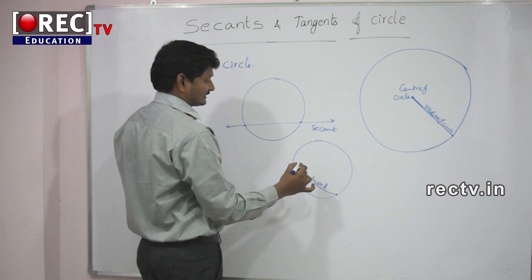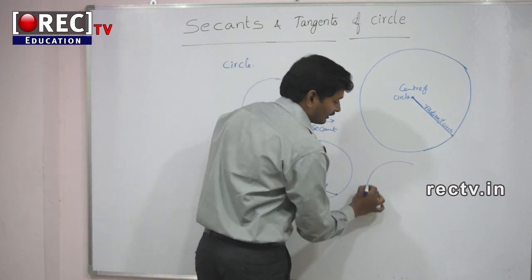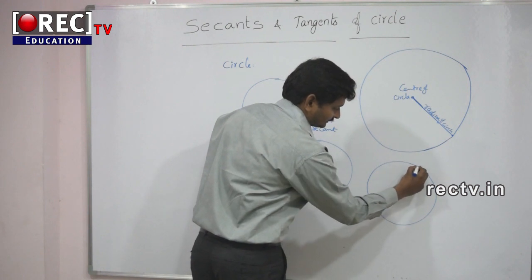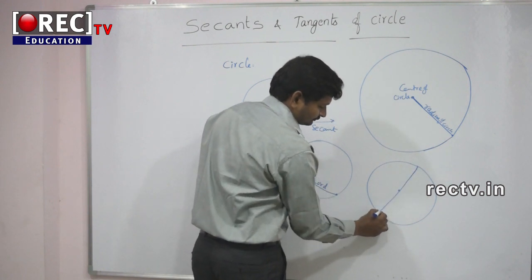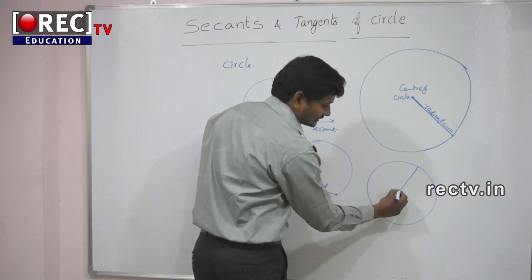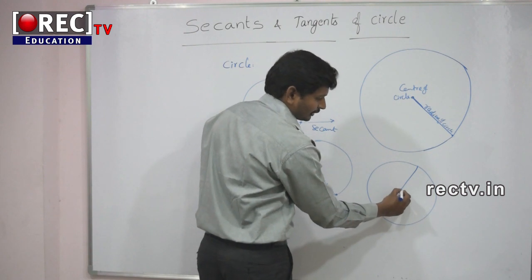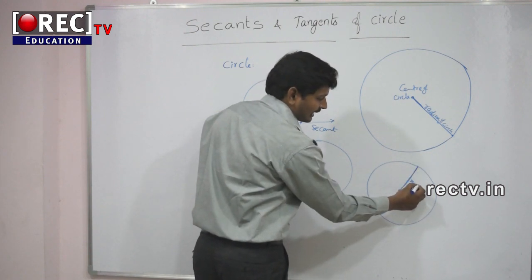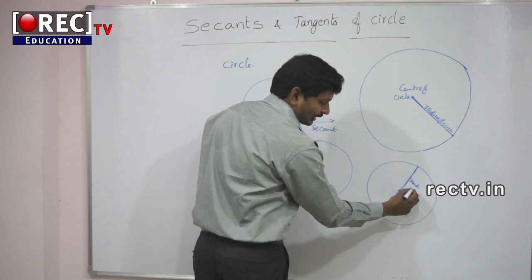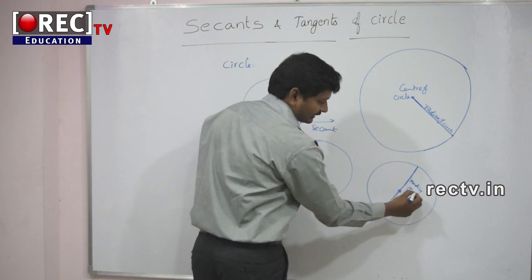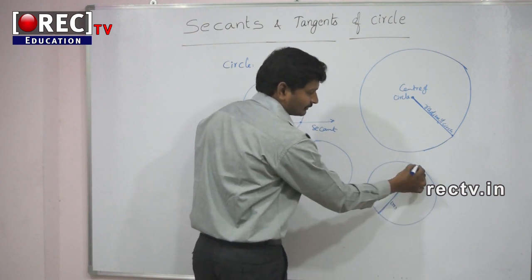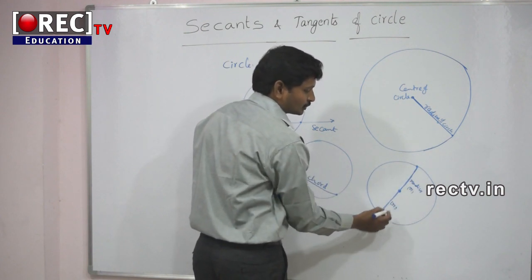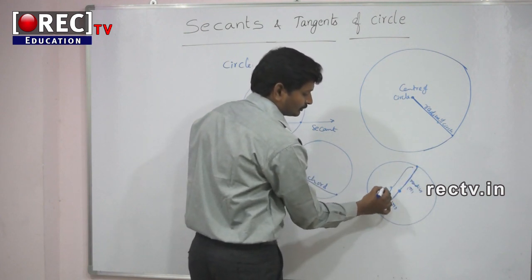Diameter is nothing but the chord which passes through the center of the circle. Here this is a chord passing through the center of this circle, so this becomes the diameter. Here this is radius r and this also radius r. The length of the diameter is equal to r plus r, that is equal to 2r. This total length is equal to 2r.